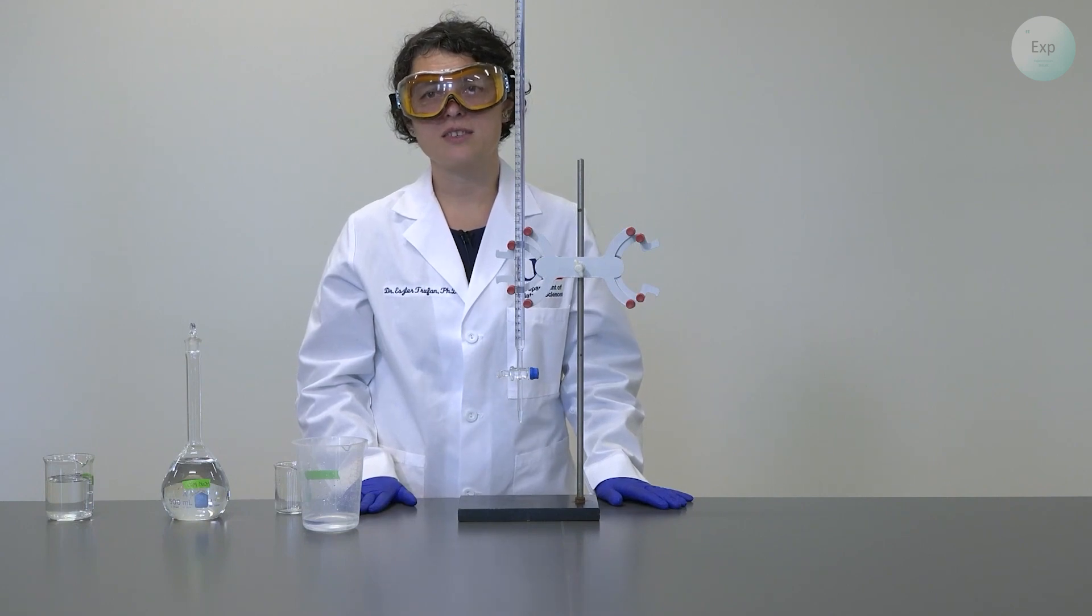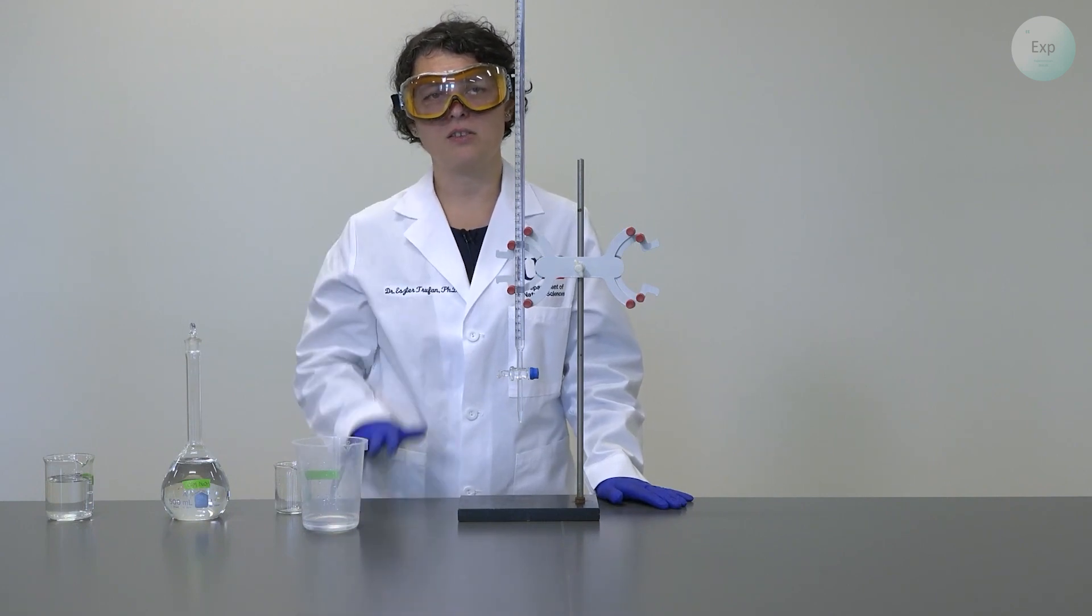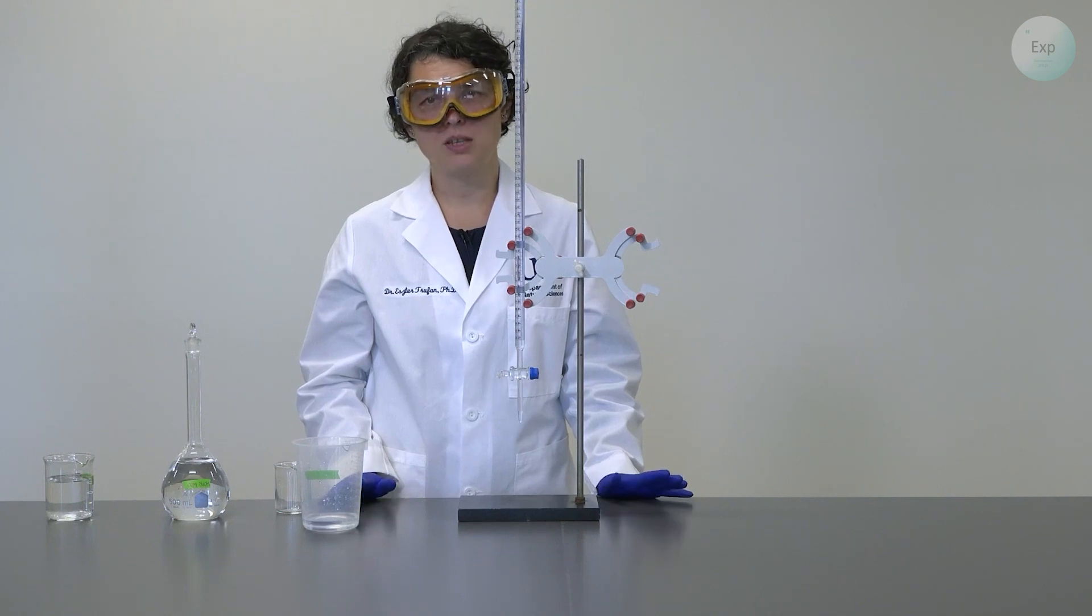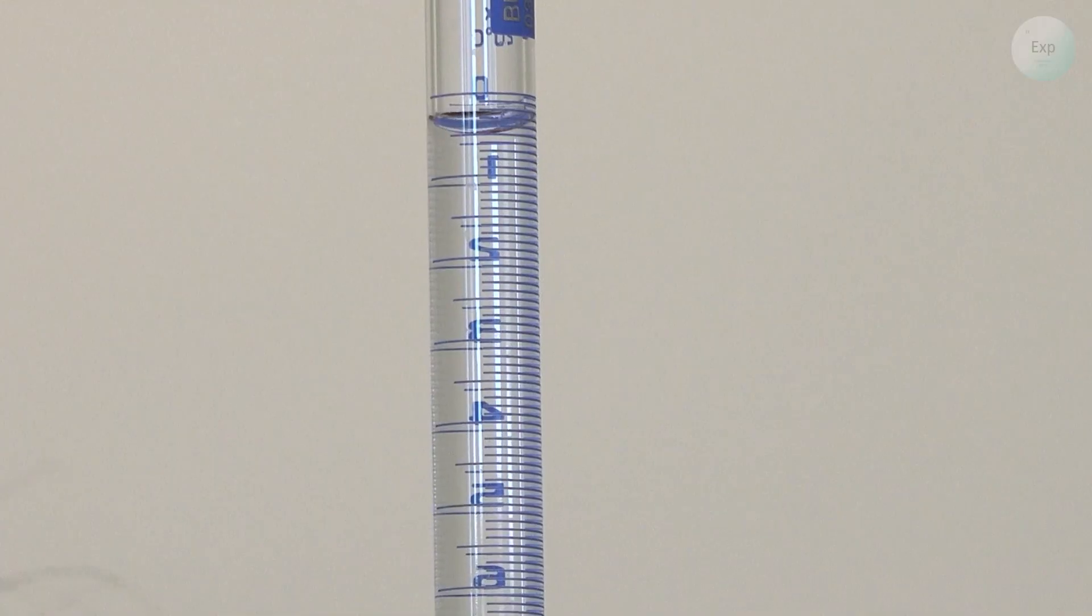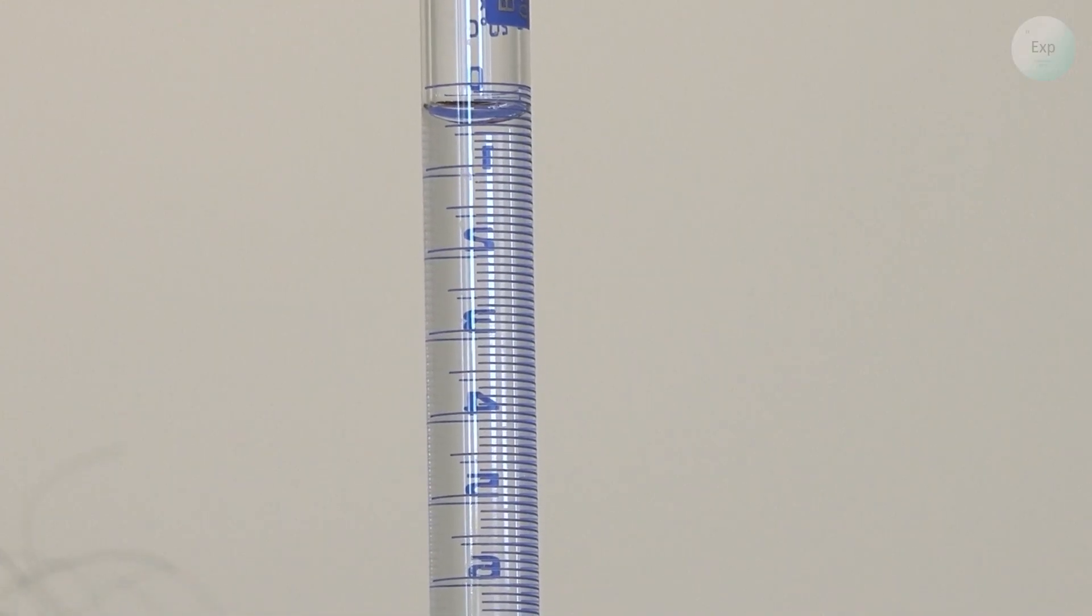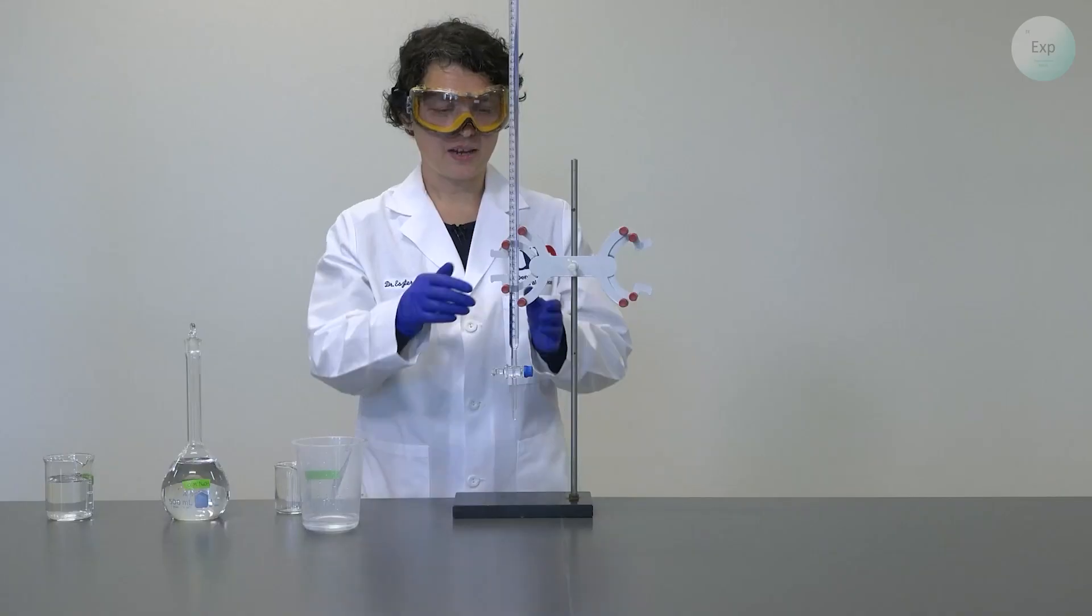The only difference between a burette and the 10 milliliter graduated cylinder is that in the case of a 10 milliliter graduated cylinder, the zero is on the bottom and the 10 is on top. Whereas in most burettes, with the exception of the very few, the zero is going to be at the top and the 50 or other number will be at the bottom.